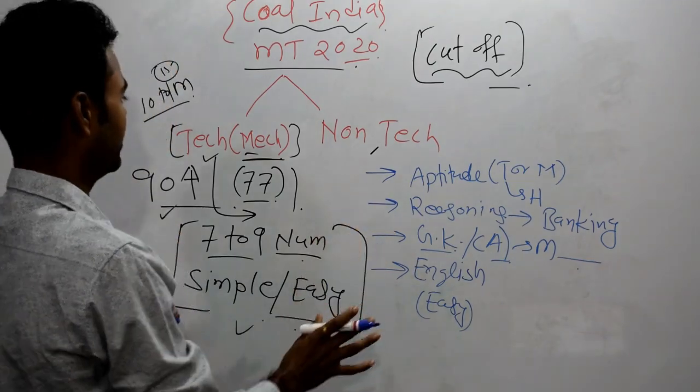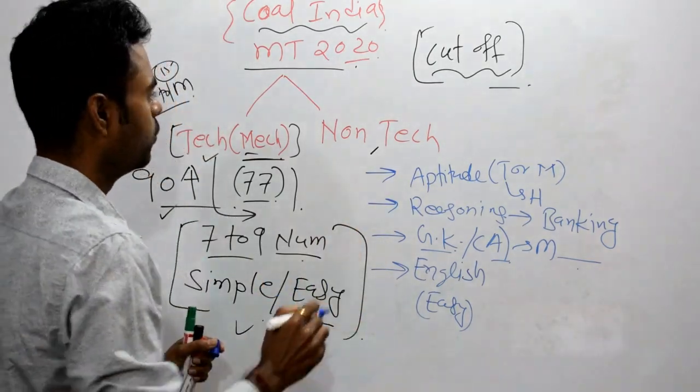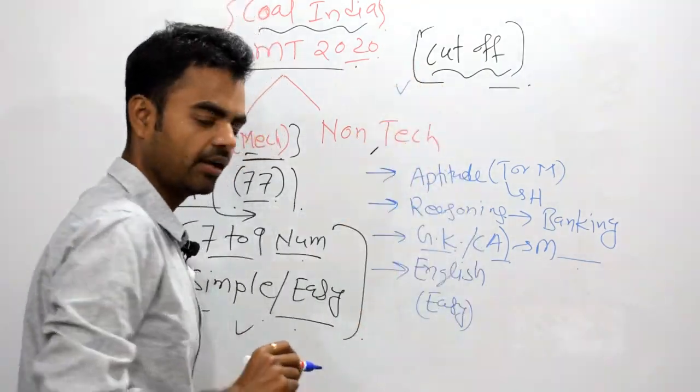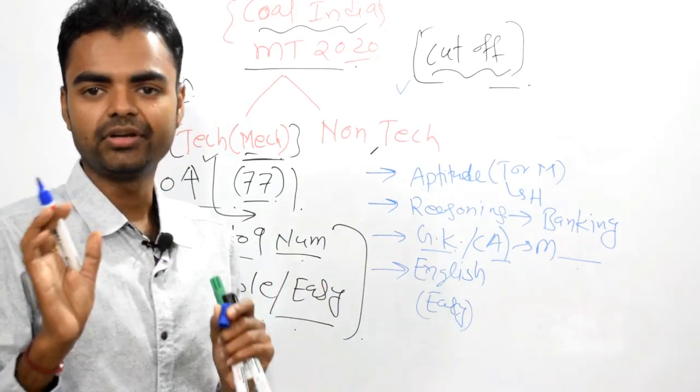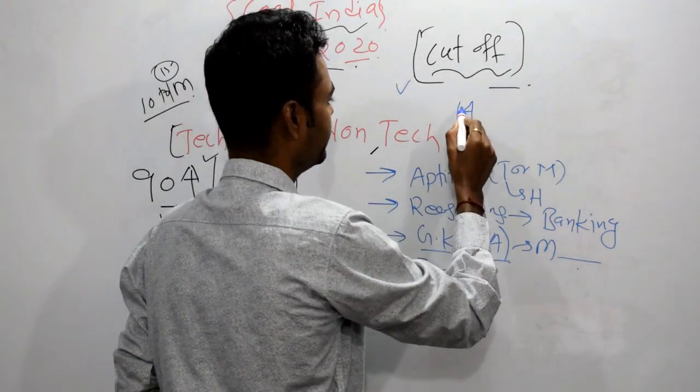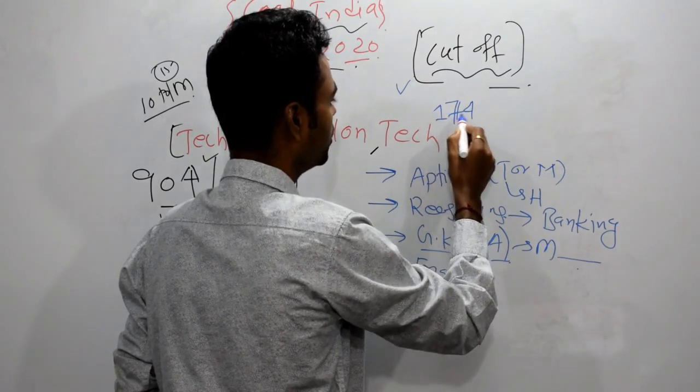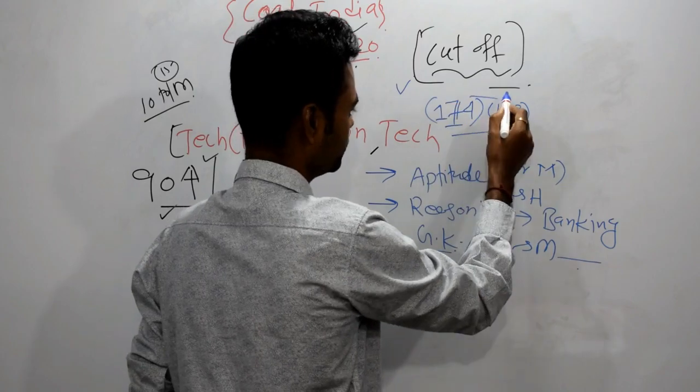This is about the analysis of the paper, what I got. But the most important thing is, what would be cut-off? After getting this analysis, I am not telling you anything from my side. From data, I am telling you, the cut-off would be around 170, 174, 173.